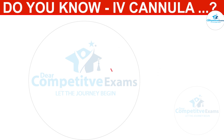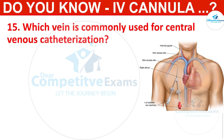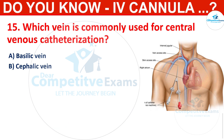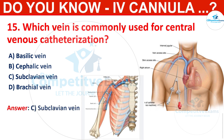Q15. Which vein is commonly used for central venous catheterization? Options: basilic vein, cephalic vein, subclavian vein, or brachial vein. The correct answer is subclavian vein. The subclavian vein is frequently chosen for central venous catheterization.